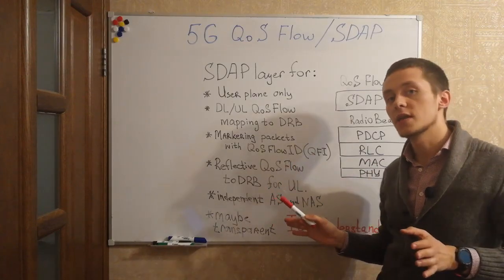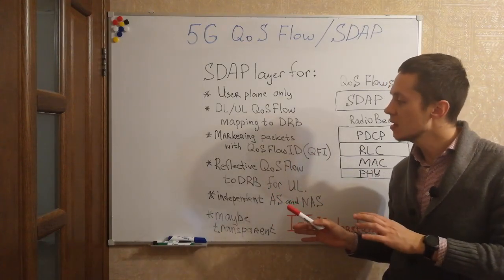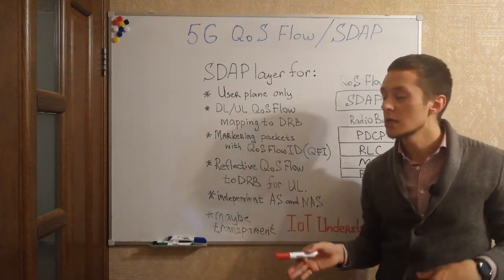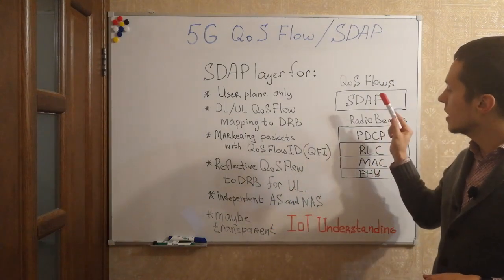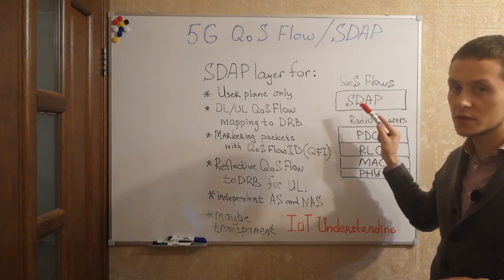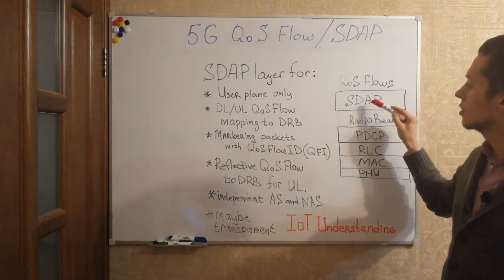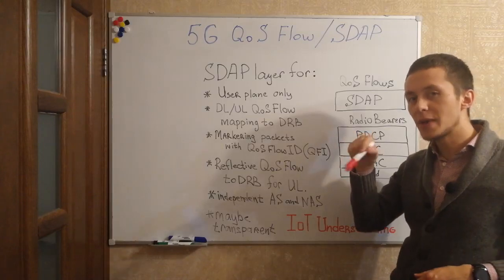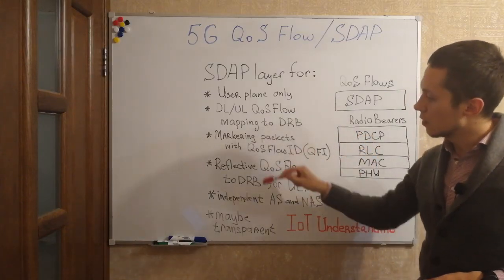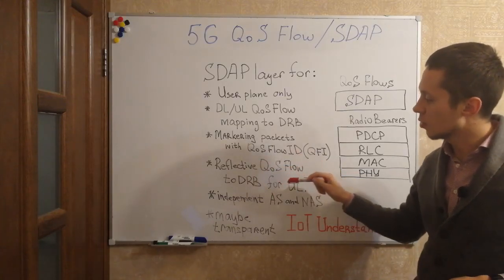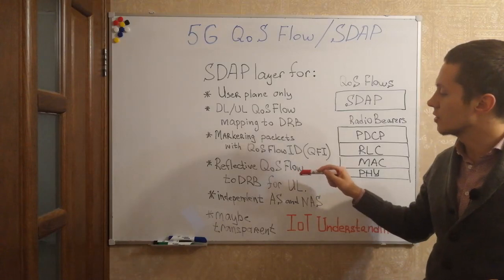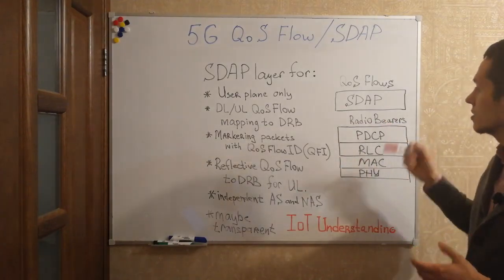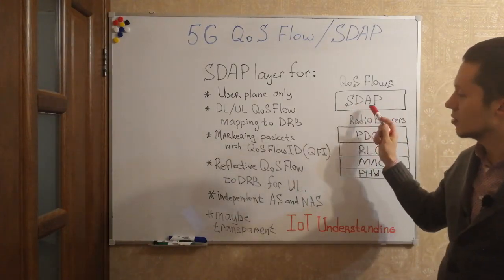There are thoughts that this feature may reduce L3 layer signaling. But on the other hand, this feature may increase signaling in this layer, because in this case the user equipment has to monitor each downlink packet for the reflective quality of service feature to set up the same settings for uplink. And this may increase SDAP layer signaling.